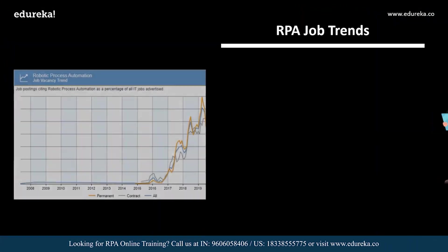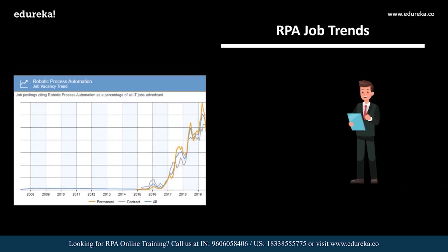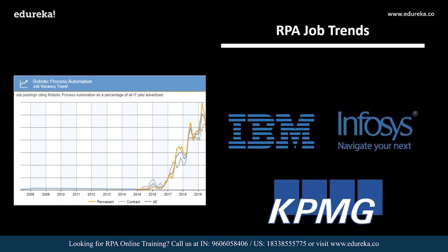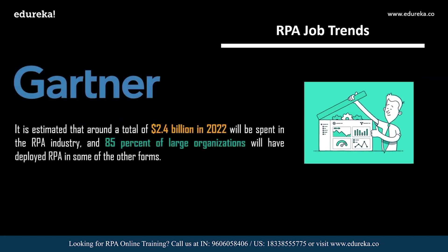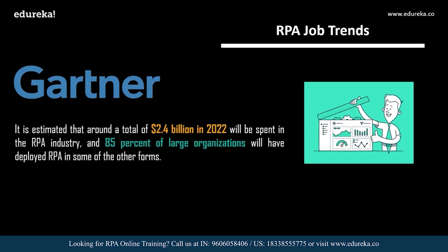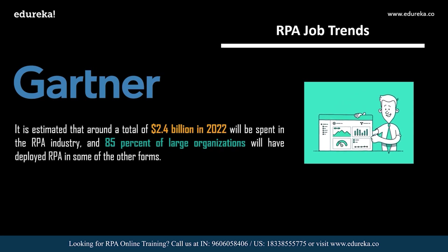The number of RPA developer jobs in the United Kingdom is increasing on a large scale. Career opportunities will only shoot through the roof, with both startups and well-established companies such as IBM, Infosys, and KPMG offering lucrative salaries. According to Gartner, around 2.4 billion US dollars is estimated to be spent in the field of RPA by 2022, and 85% of large organizations will have deployed RPA in some form. All industries are looking for professionals who can quickly adopt RPA technology and automate manual tasks.